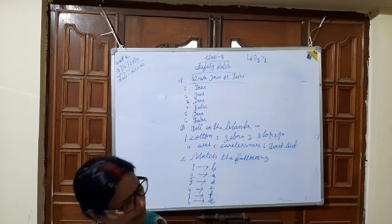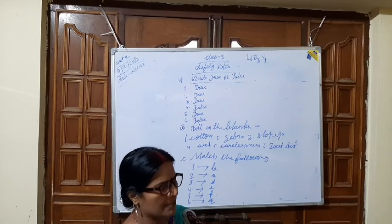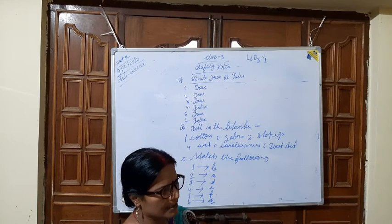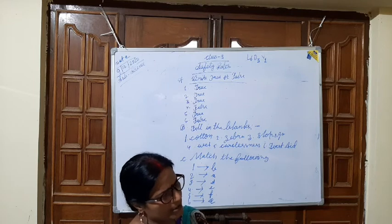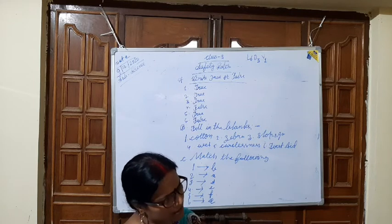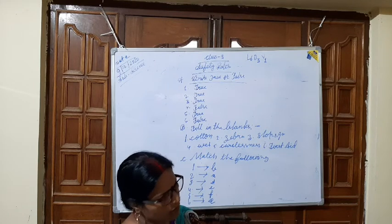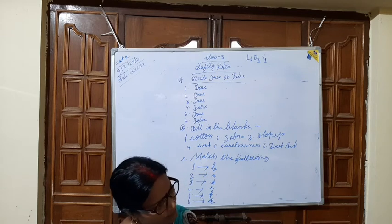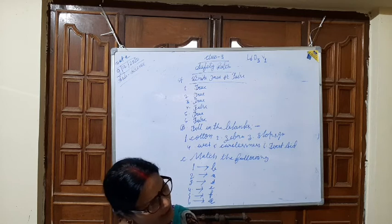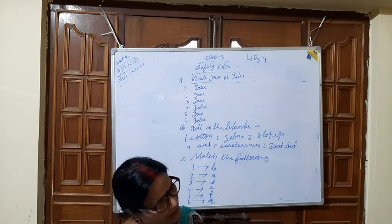When we go near gas or stove, what kind of clothes should we wear? Cotton. Cross the road at zebra crossing. Red light says stop and green light says go. We should not touch electrical switch with wet hands. Most accidents occur because of carelessness.